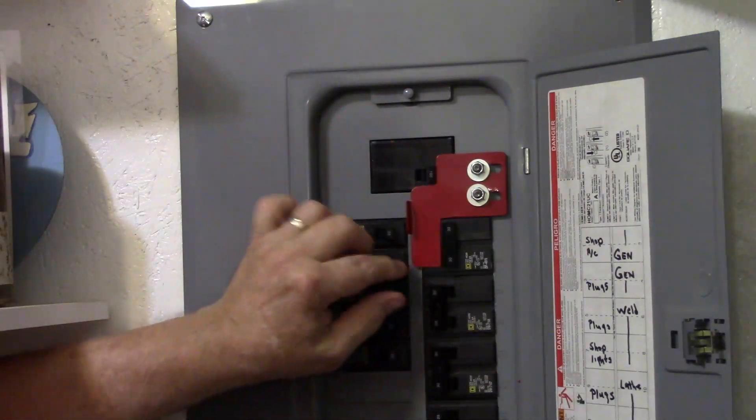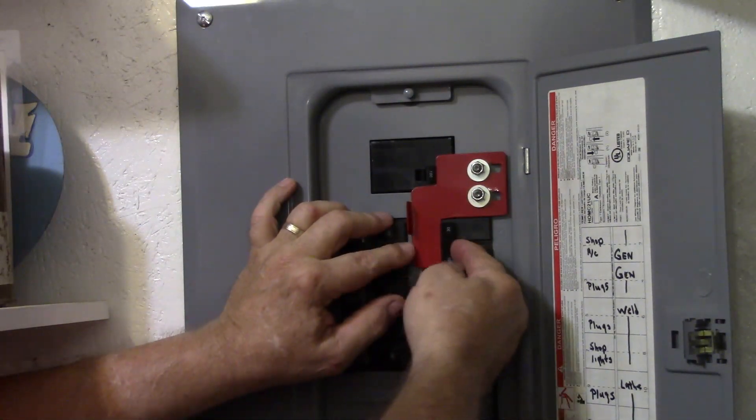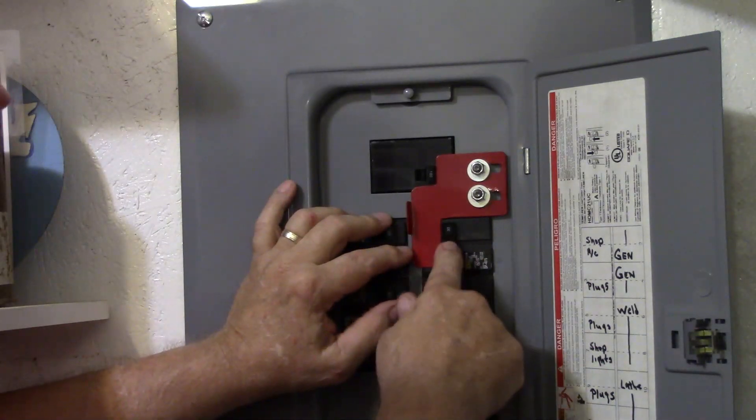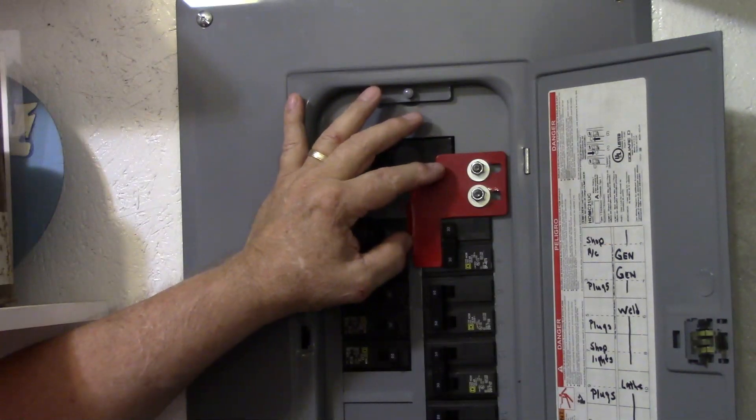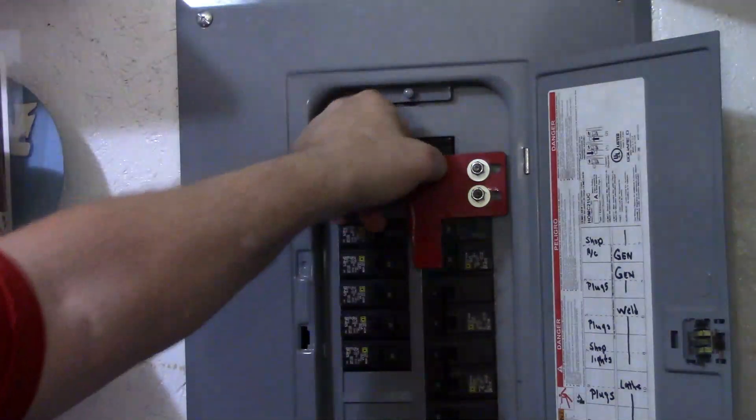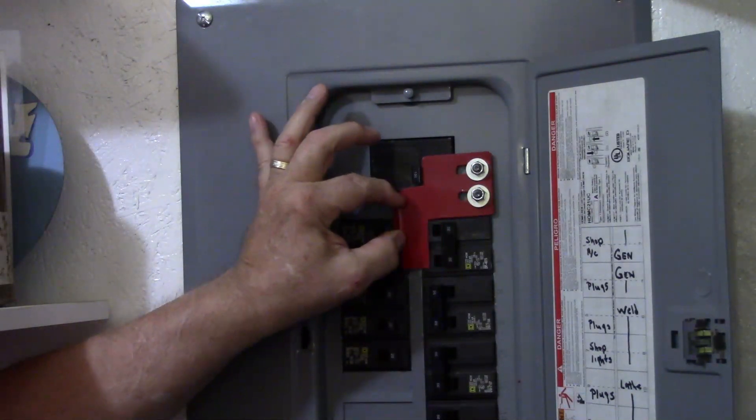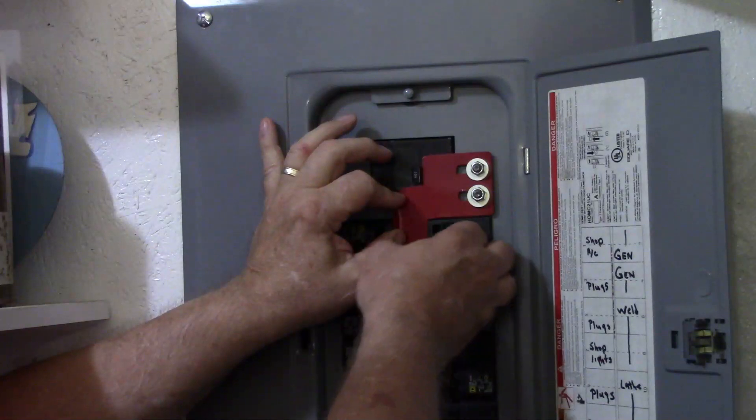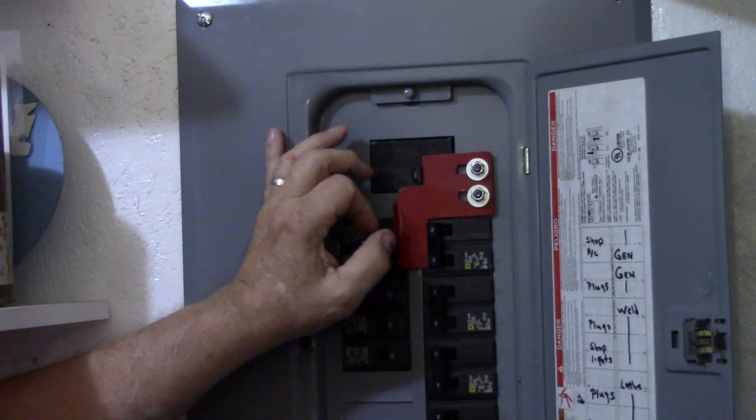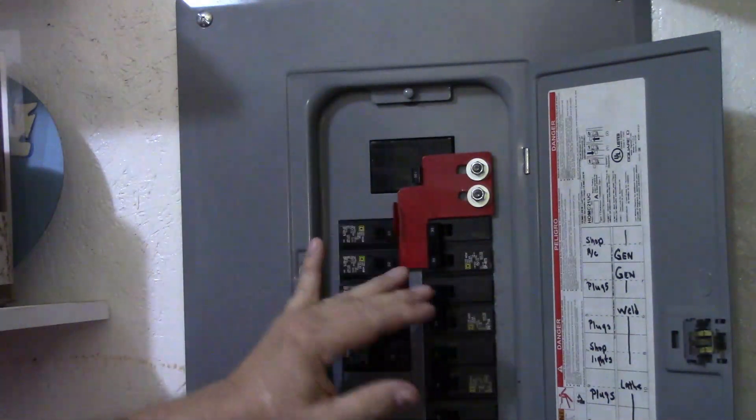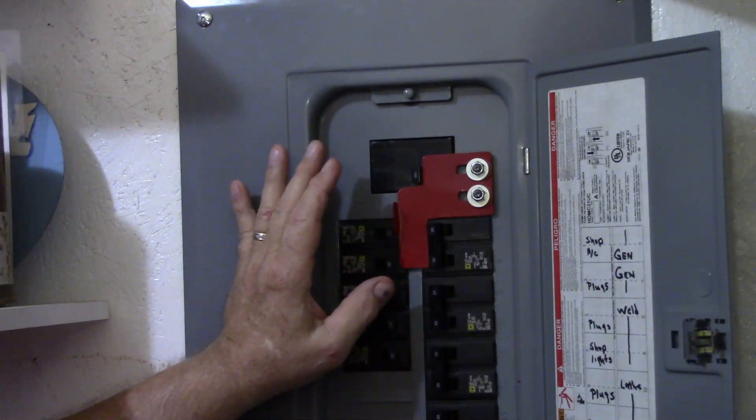As you can see right here, with my 100 amp breaker on I can't turn my generator on. So I'm not going to be able to actually run anything off the generator till I flip my 100 amp breaker off. Then I'm going to be able to slide this over and then I can flip my breaker on, so then the utility line is protected from backfeeding my generator current into the utility lines.